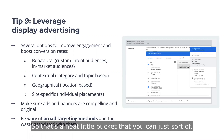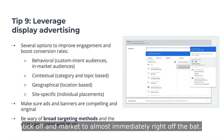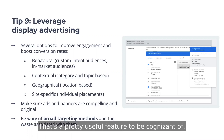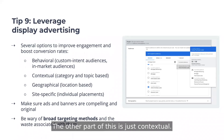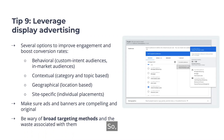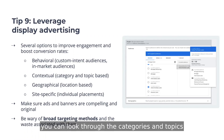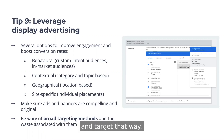That's a neat little bucket that you can just tick off and market to almost immediately right off the bat — a pretty useful feature to be cognizant of. The other part of this is contextual targeting, which is similar to in-market audiences. You can look through the categories and topics listed under either Google or Facebook and target that way.